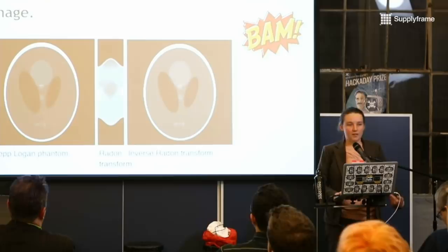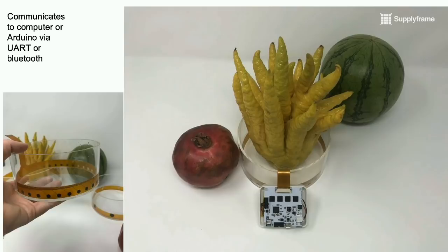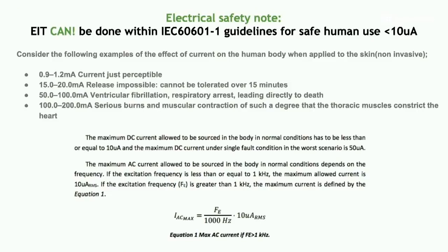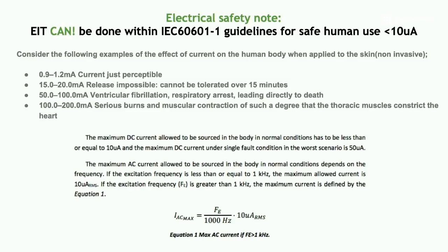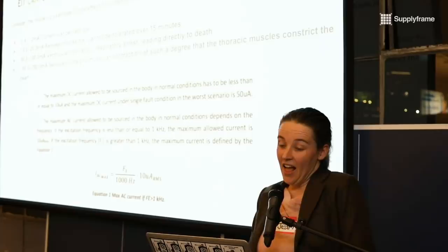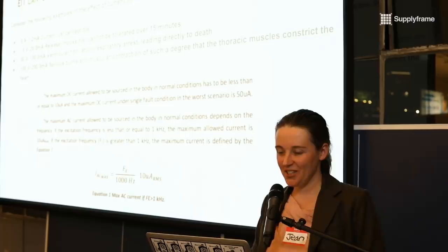This is what the system looks like. It's two inches square — I brought it with me and I can show it to people afterwards. It attaches to a tank, your body, or an electrode array to put around your ribs. You're probably wondering about safety. There's a set of safety guidelines called IEC 60601-1, and it's within those, which is nice. You can get better results on fruit specifically if you have higher current levels, but that's okay.